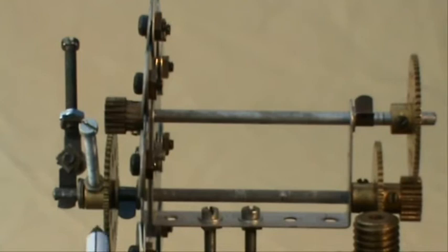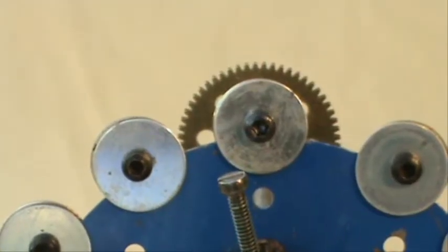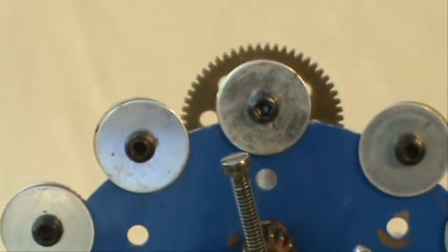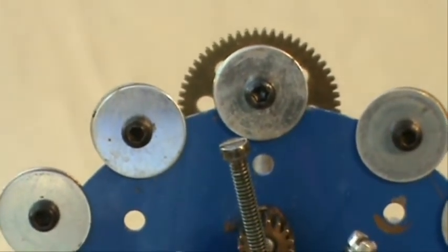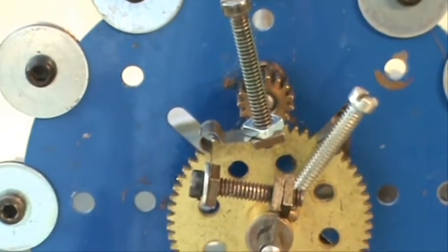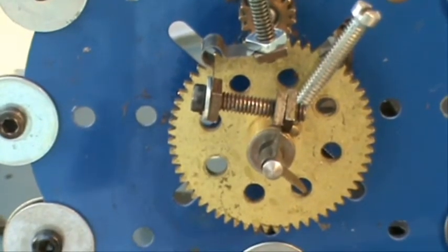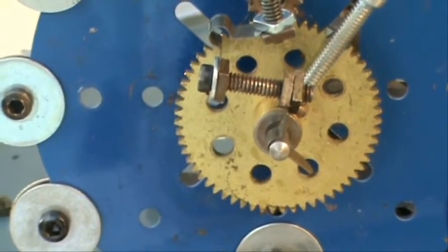That's a bolt fixed to this gear here. The minute hand is a long bolt fixed to a spring clip, fixed to another bolt, fixed to a spring clip, fixed to the shaft at the bottom.